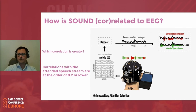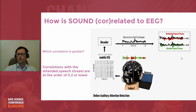The higher correlation points to that speaker being the target of our listener. The correlation values are very low — theoretically you might reach 0.2 — but the precision of this method is around 63 to 65 percent. So it is above chance level, still relatively low, but useful.